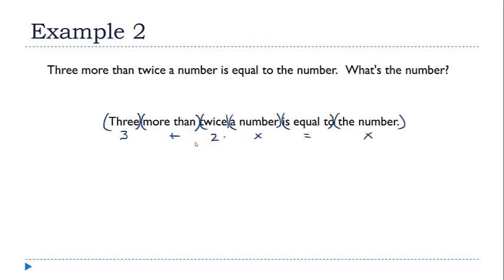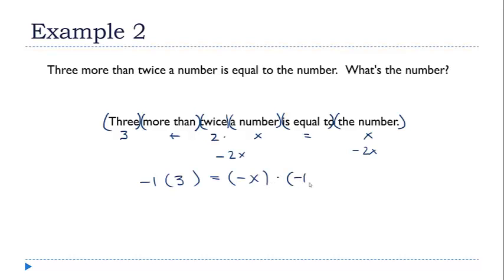Now we have an equation we can solve. I'll start by subtracting 2x from both sides, which leaves me with 3 equals minus x. To get rid of the minus, I'll multiply both sides by negative 1. That gives me the final answer: x equals negative 3.